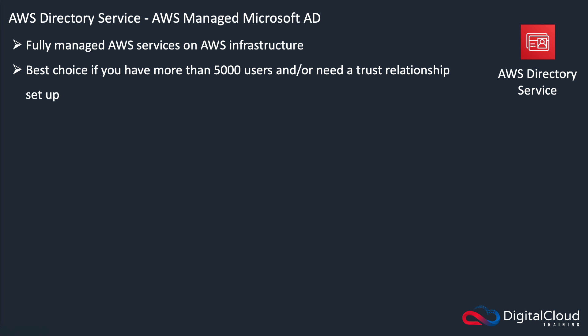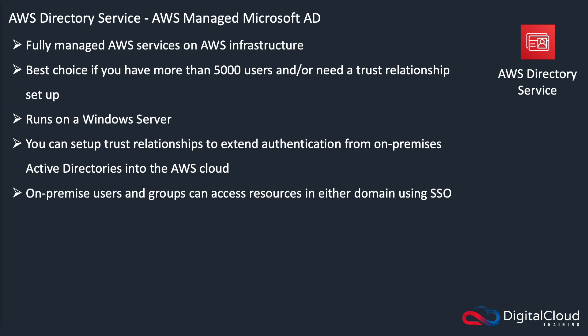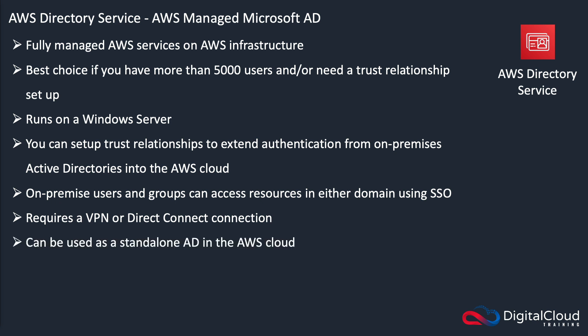Microsoft AD is very powerful and fully managed as an AWS service. It's the best choice if you've got a lot of users and you need complex features like trust relationships. It runs on Windows and you can set up trust relationships to other directories. On-premises users and groups can also access resources in either domain using single sign-on. It does require a VPN or a Direct Connect connection to use it from your on-premises data center. You can think of this as something you can use as a standalone Active Directory in the cloud — if you just want to run Active Directory in the cloud, add your users there, and connect those to your applications.